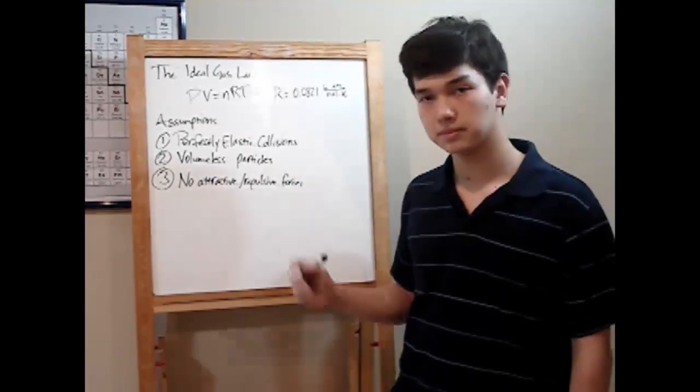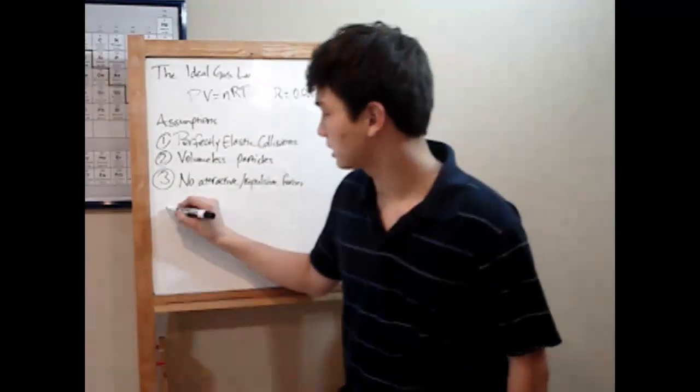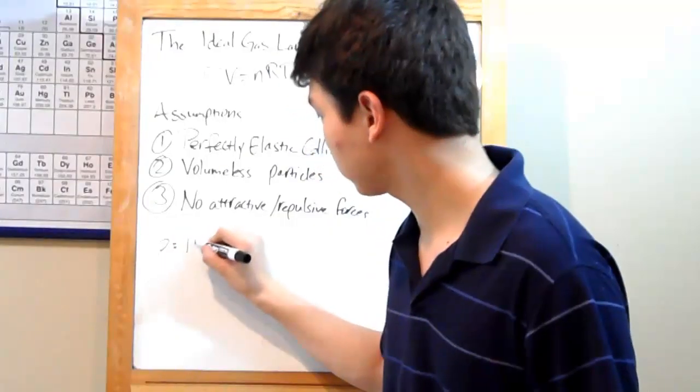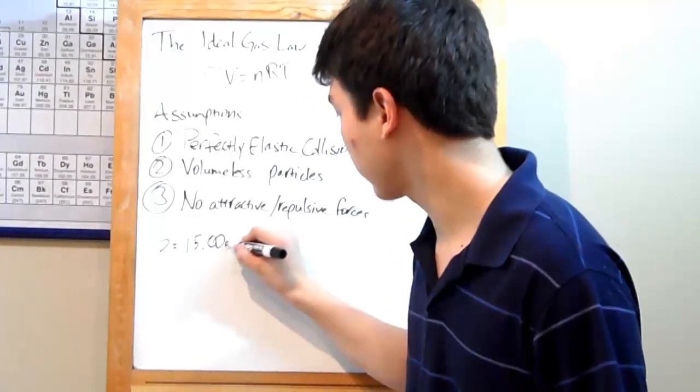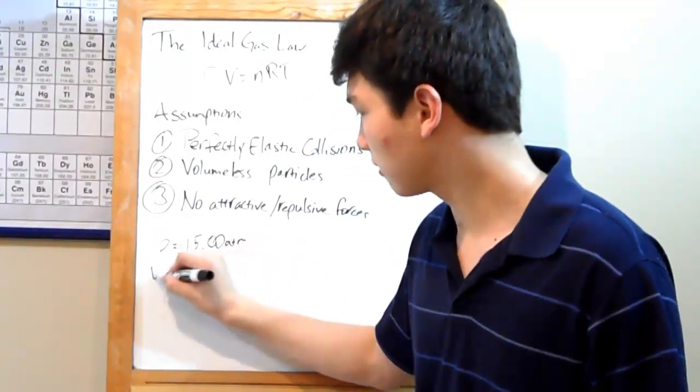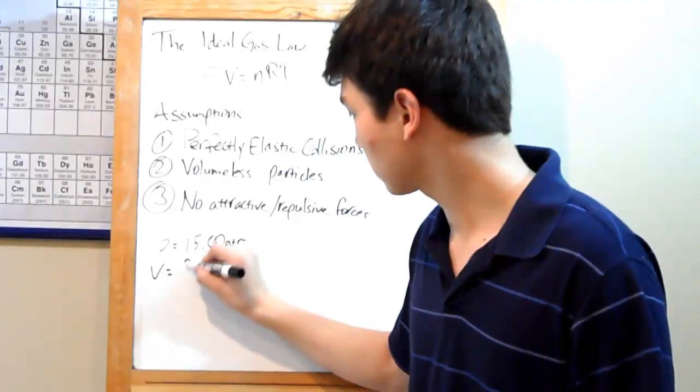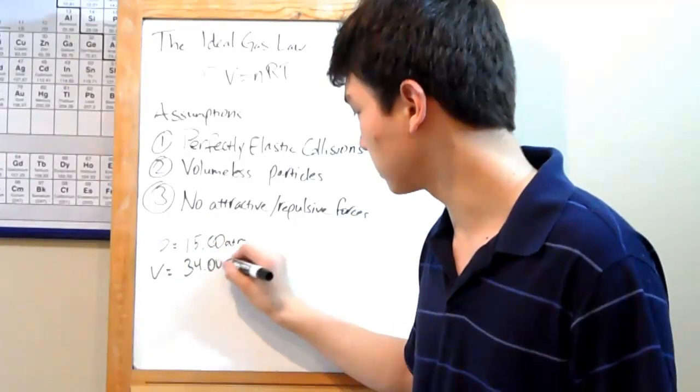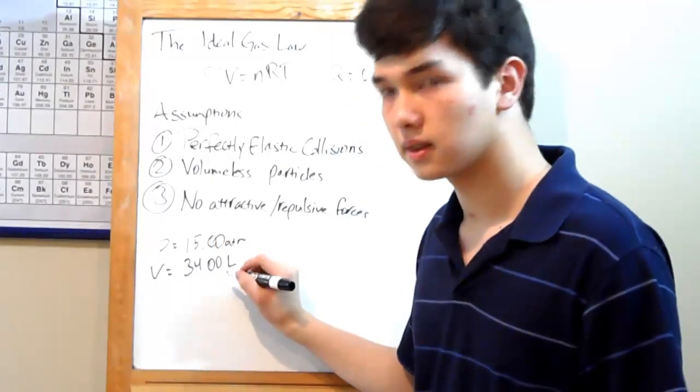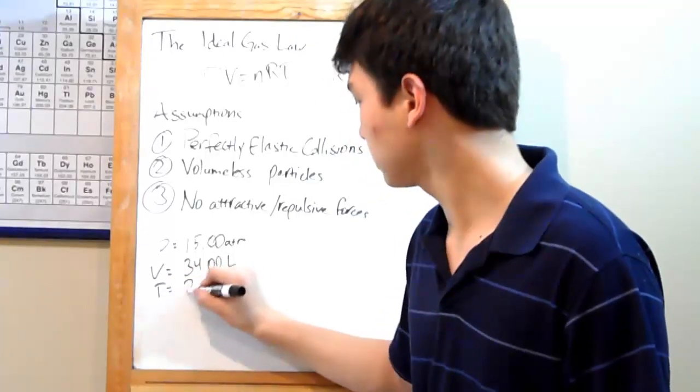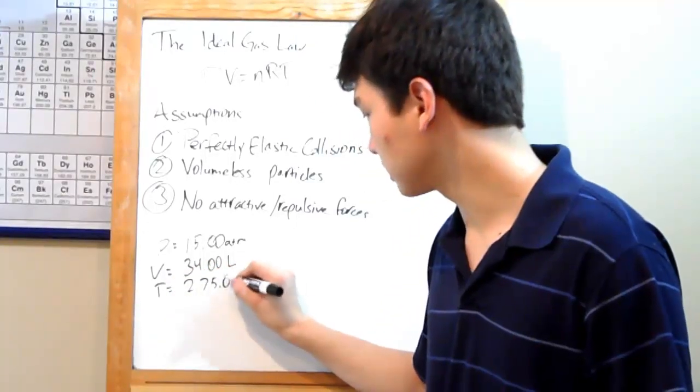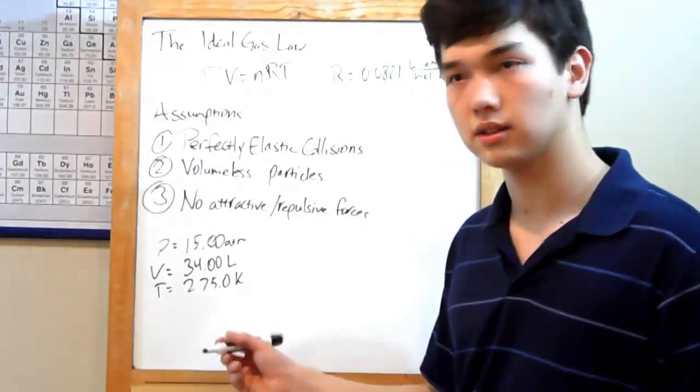Let's do an example. Given a gas that has a pressure of 15.00 atmospheres, a volume of 34.00 liters, a temperature of 275.0 Kelvin, then you just solve for moles.